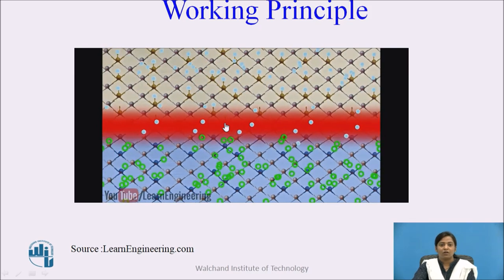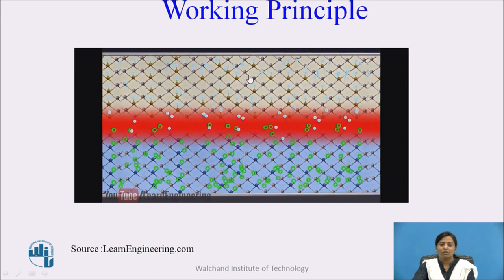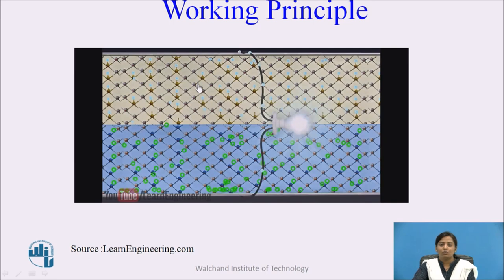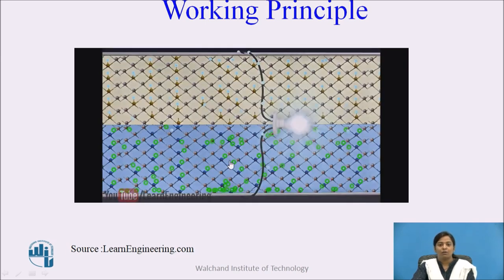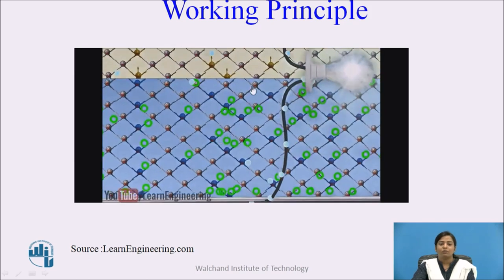Due to the electric field, these electrons cannot cross the junction, so electrons stay on the N-side and holes stay on the P-side. A large number of excess electrons accumulate on the N-side and excess holes on the P-side, generating negative charge toward the N-side and positive charge toward the P-side. When these two terminals are connected by a cable, electrons from the N-side are attracted toward the P-side, flowing through the cable and generating current. In this way, whenever light strikes the solar cell, voltage and electric current are generated.